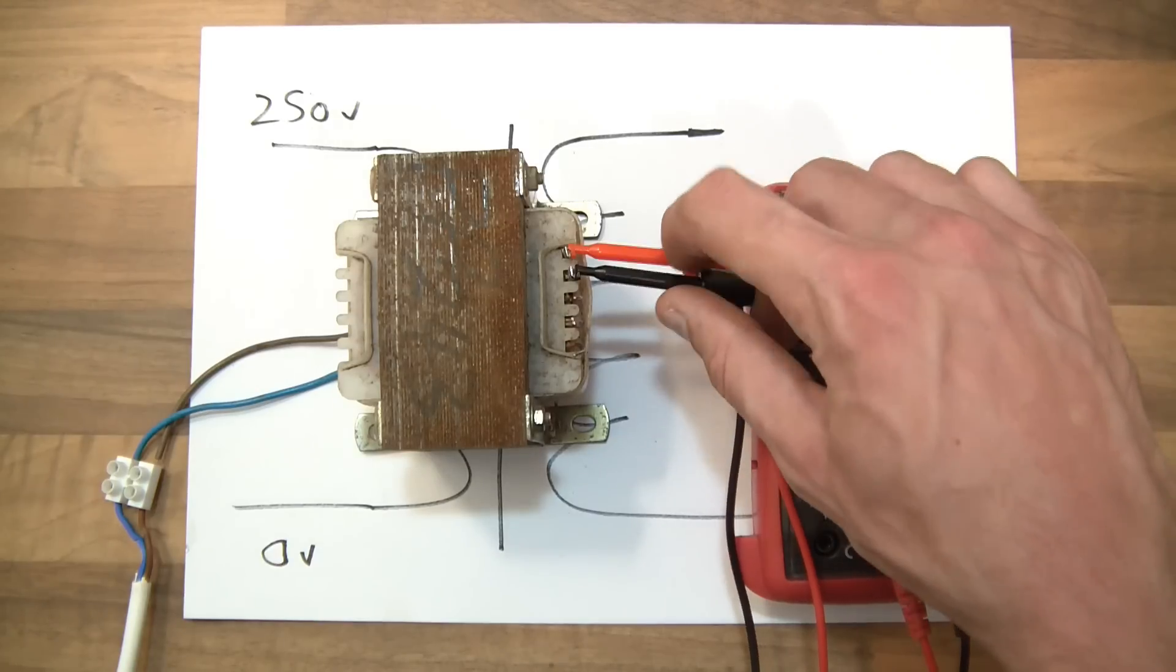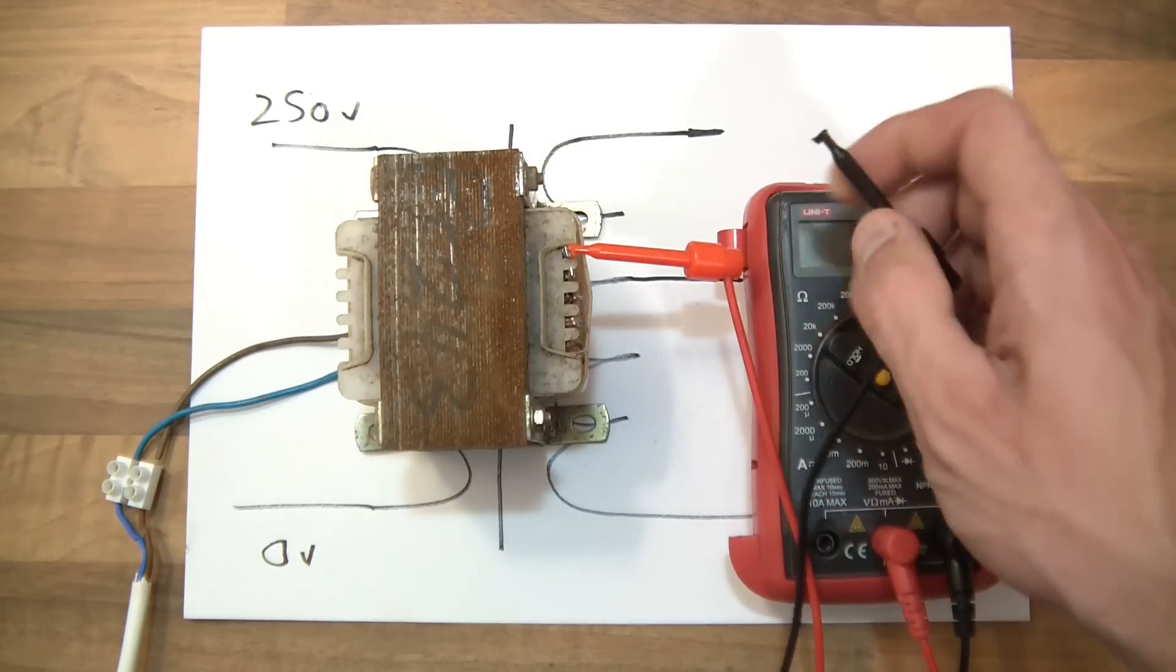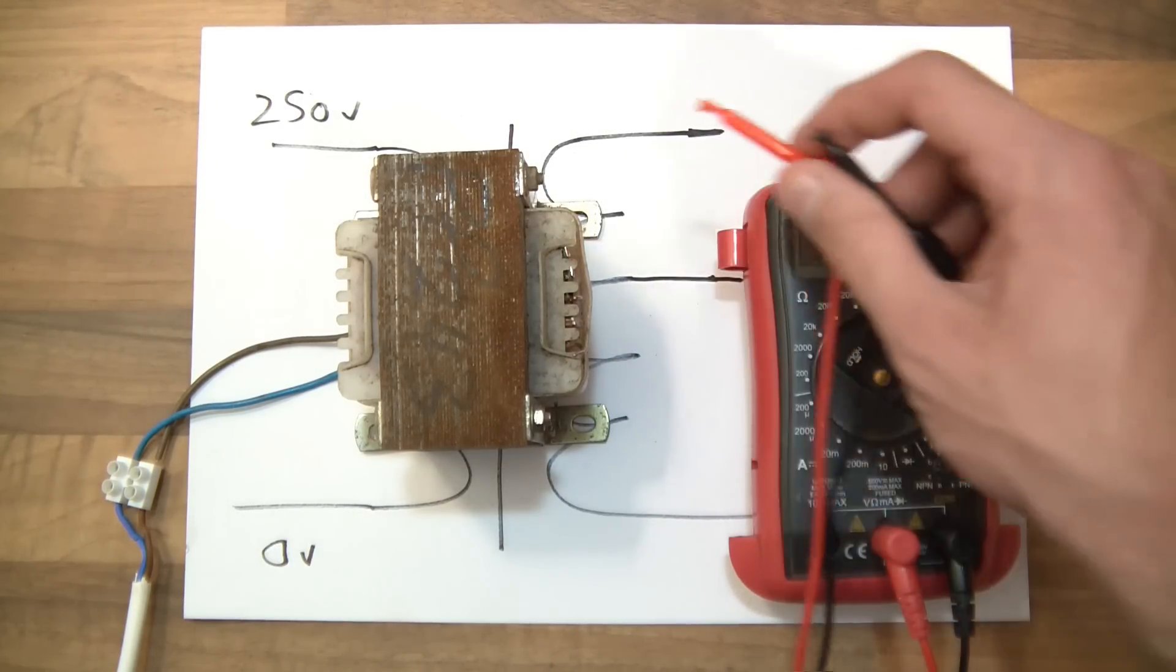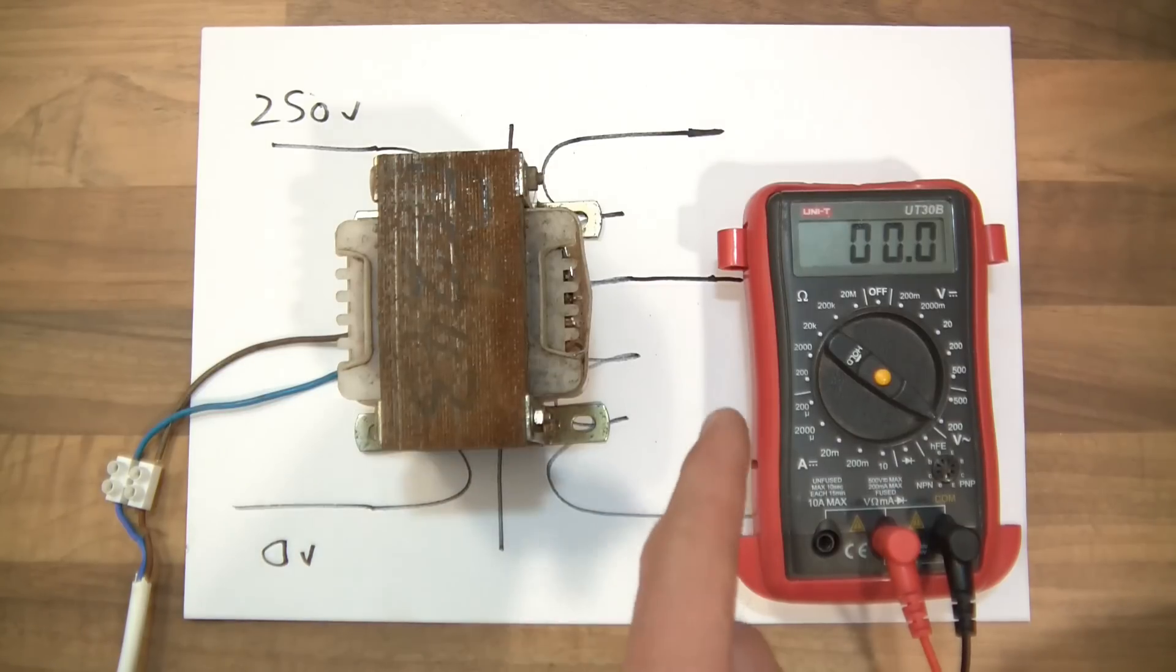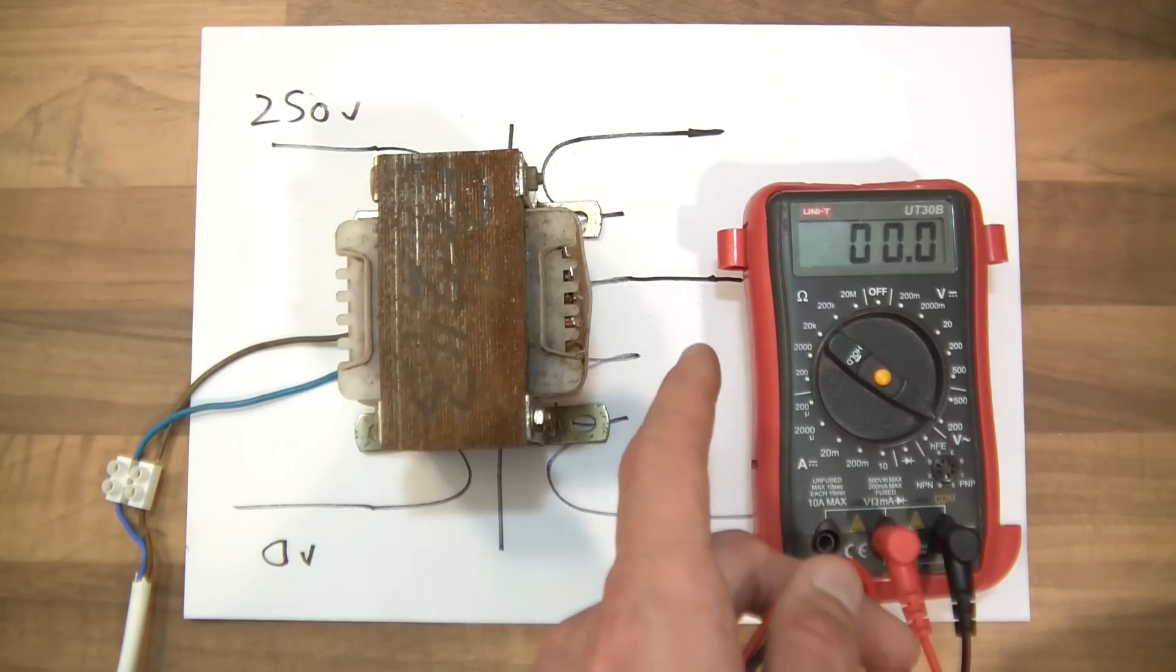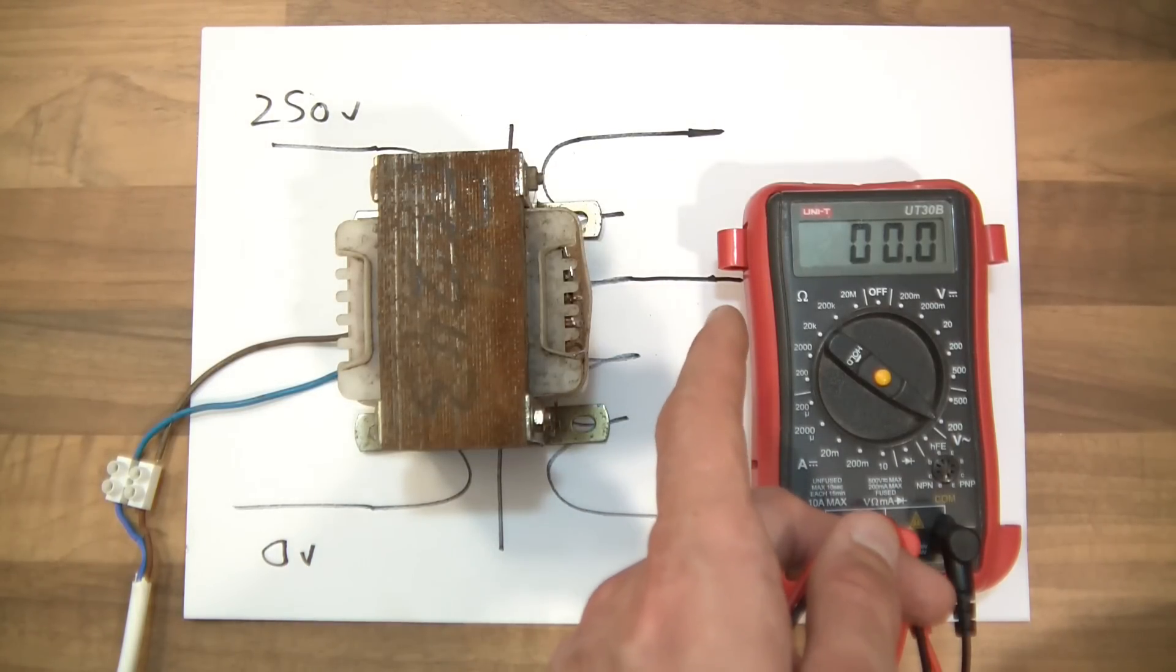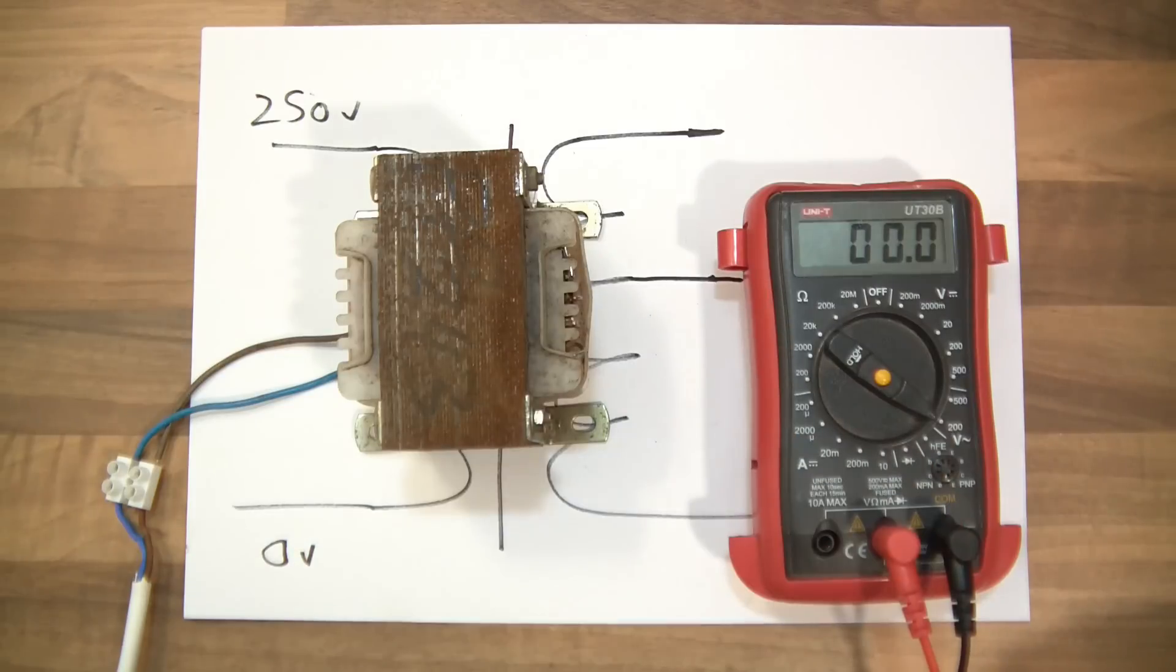Anyway, so there we go. So I've got 250 or so volts in, and I've got zero volts, 16 volts and 28 volts, and then I've got a separate zero to 28 volts again. So, hmm, very interesting.